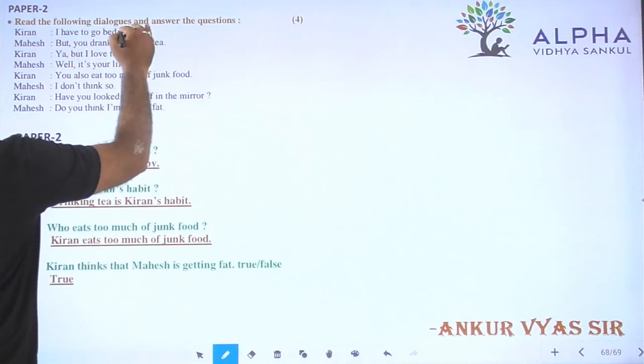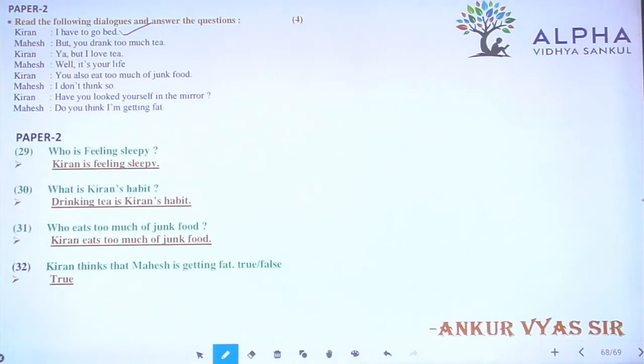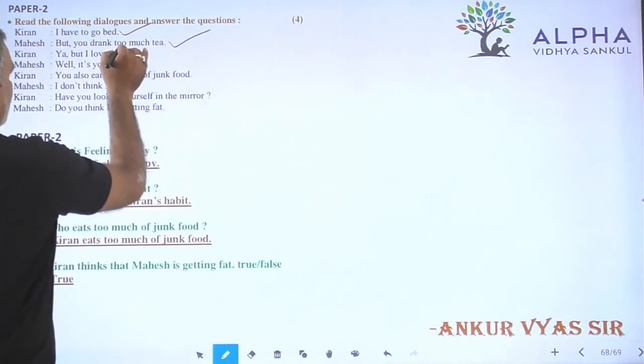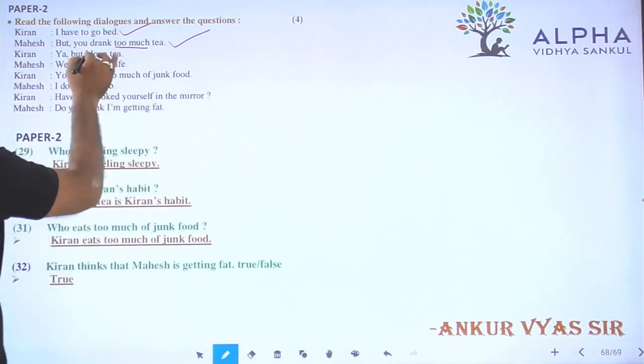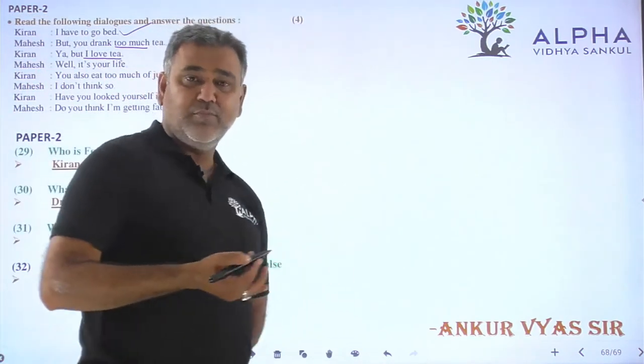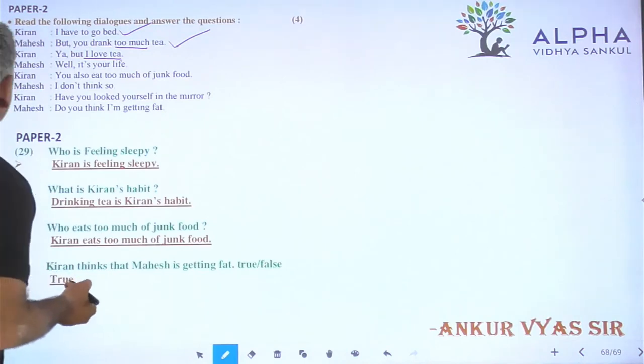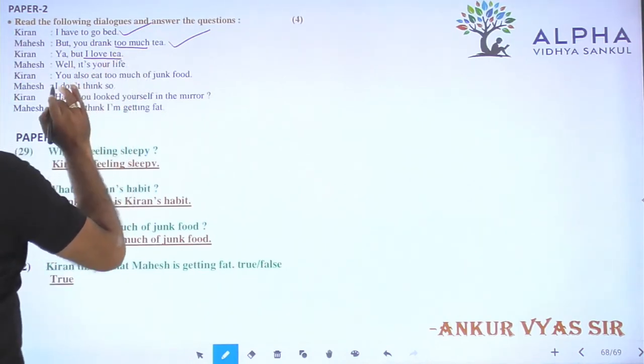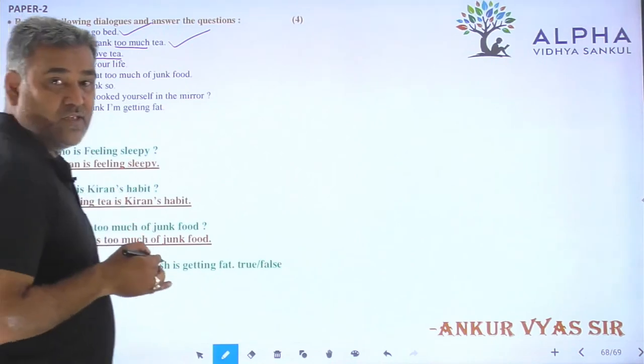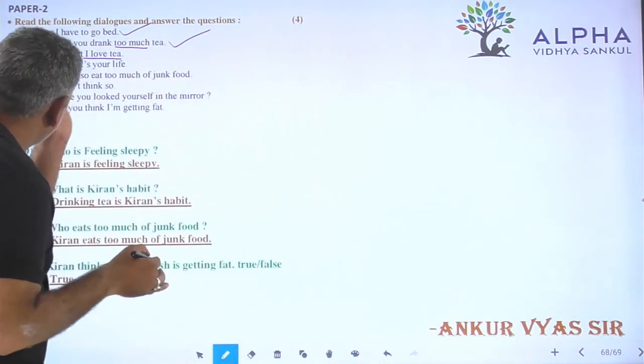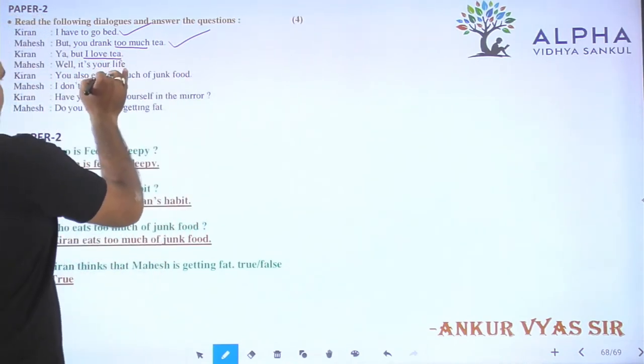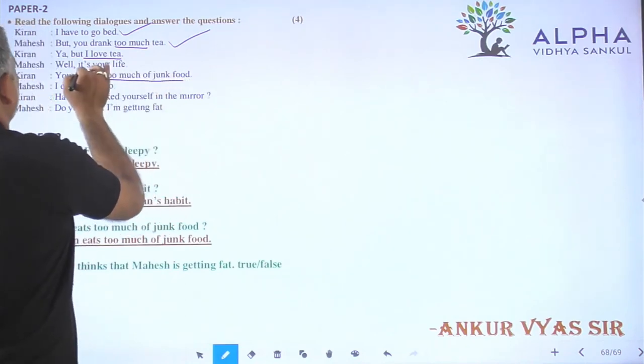The question is go to bed. So the question is too much. The question is love tea. What is your life? Life means habit. You also eat too much of junk food.